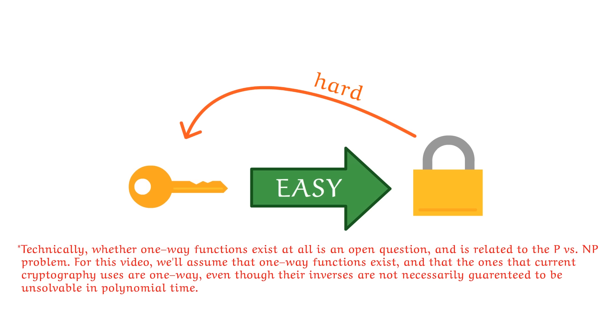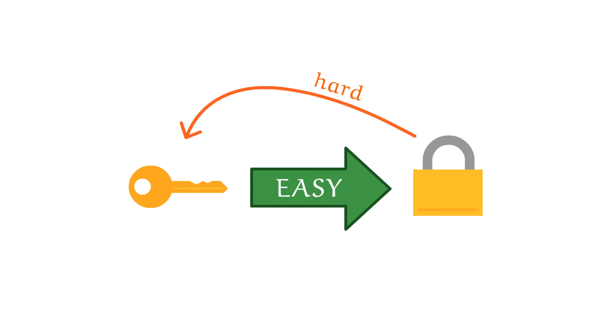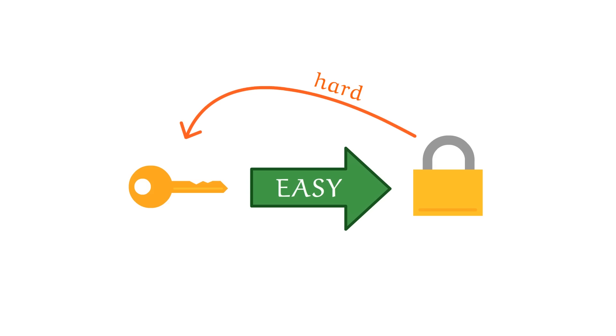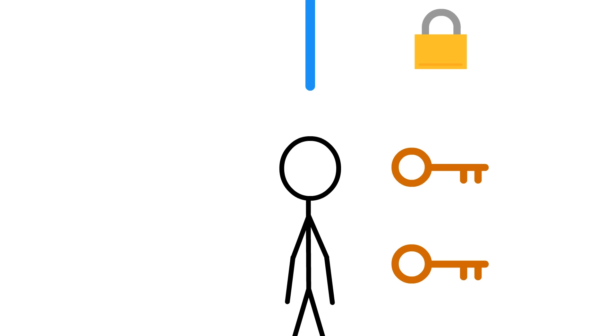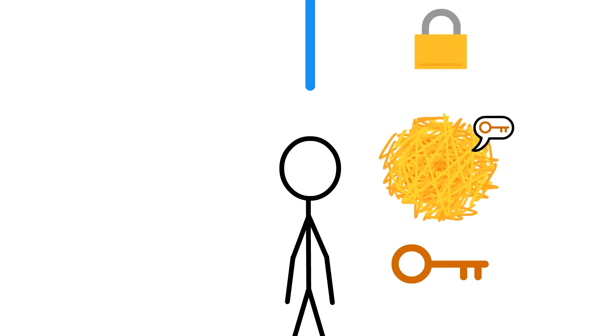By design, at least one of these processes should be easy, otherwise we wouldn't be able to create these pairs in the first place. After all, what's the point of designing the perfect padlock with no way to open it? Or the perfect padlock key with nothing for it to open? Making this process easy ensures that we can always make a useful pair. The hard part here is the critical point of this mechanism.